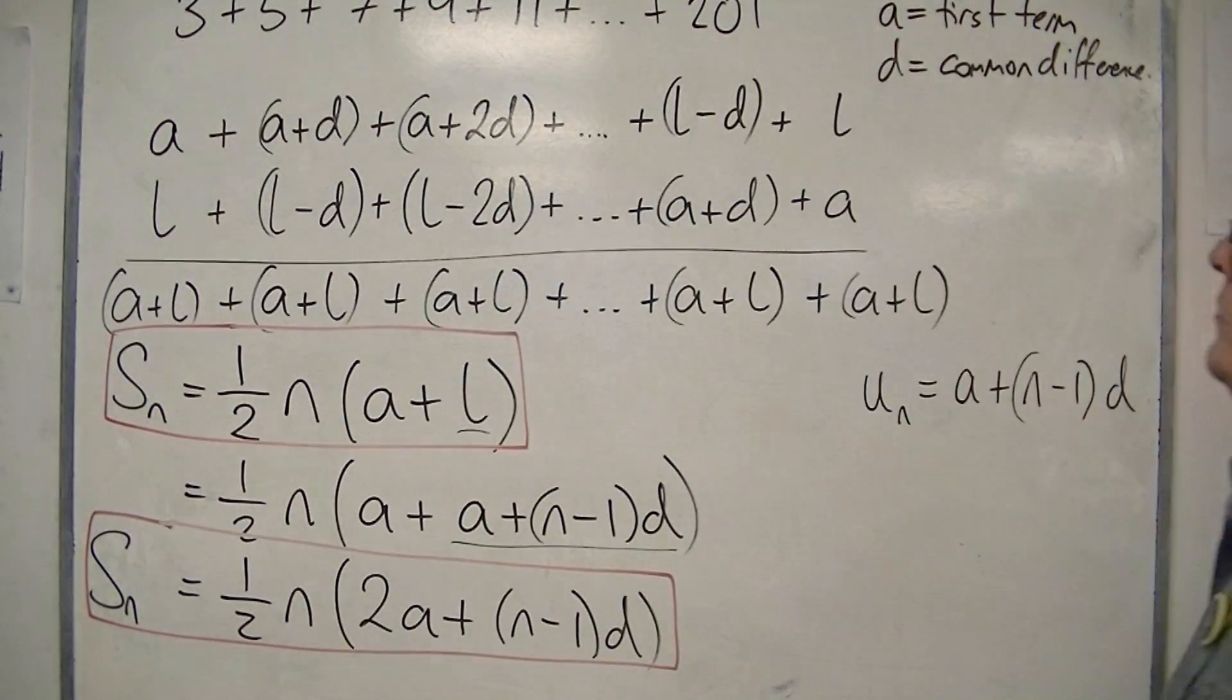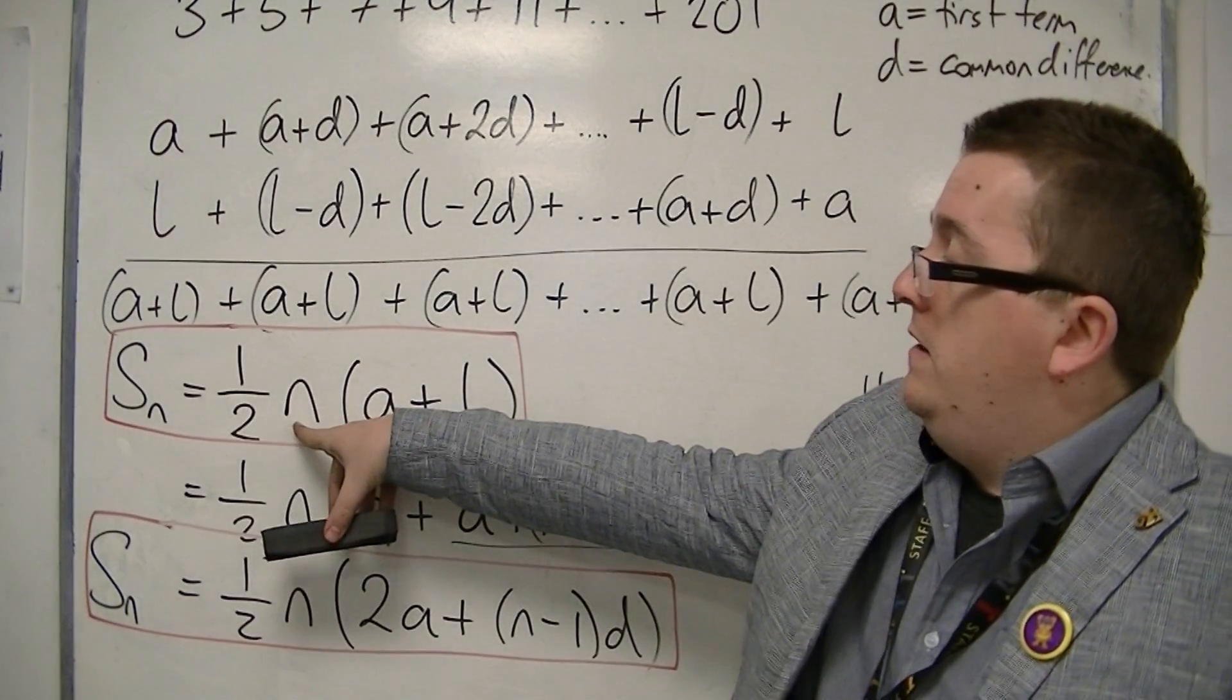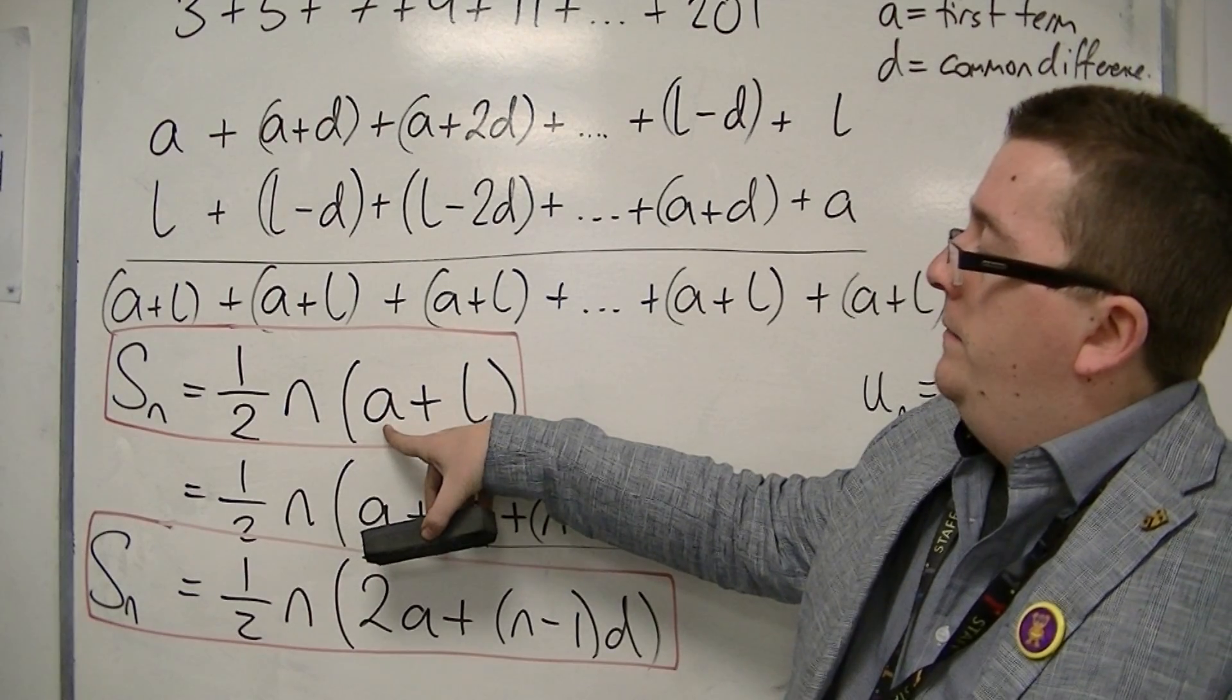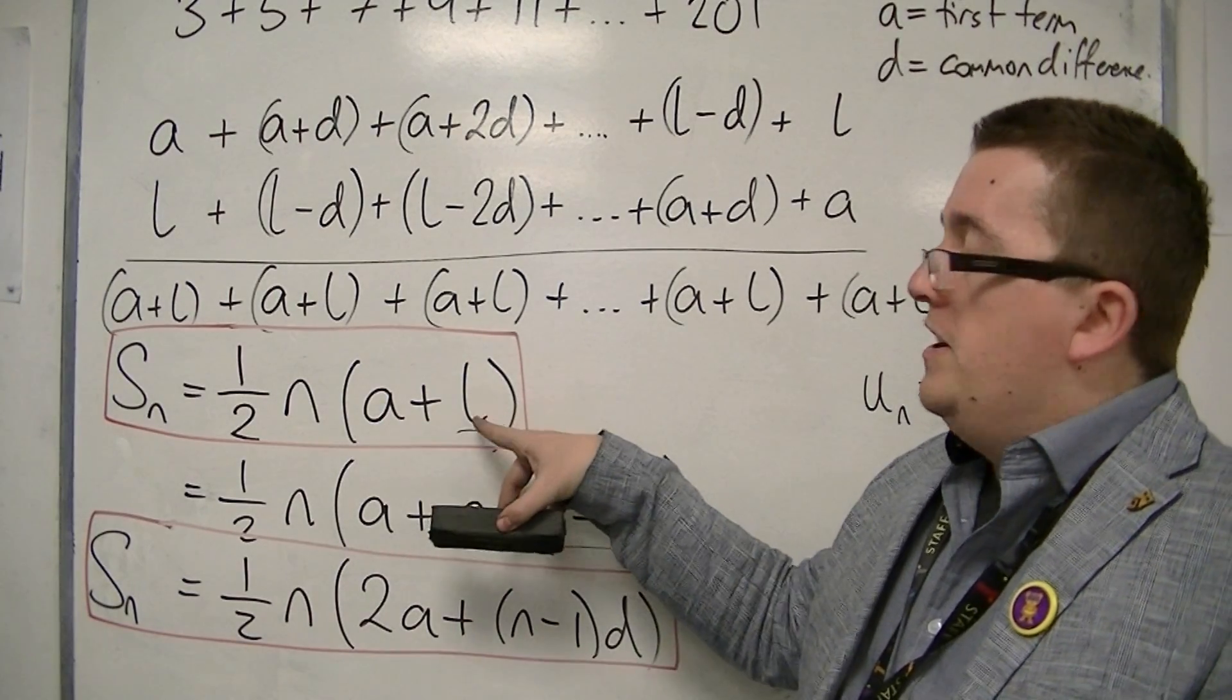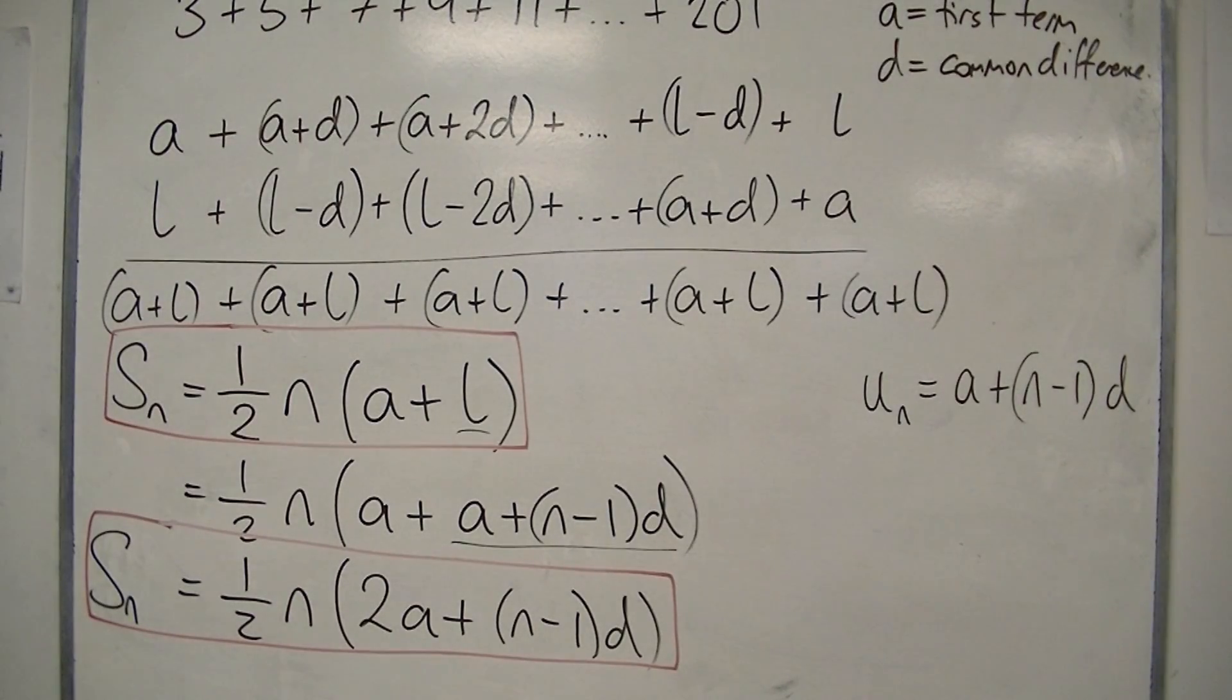Well, first of all, I'm going to need to know how many terms I actually have. Because I need N. I've already known A. And I know L. But I don't know N. I don't know how many terms I have in total.